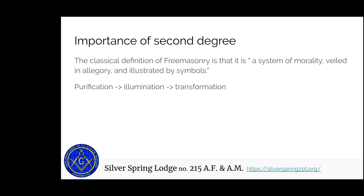We talk about the architectural tools and these ideas a lot in the second degree. Freemasonry is a system of morality, veiled in allegory and illustrated by symbols. The first degree is about purification — removing all distractions and external vices, which is where the virtues come in. The second degree is about illumination, about education, about preparing yourself and learning and applying these tools so that in the third degree you're able to undergo a transformation. That's kind of where the second degree has a lot of education built into it.